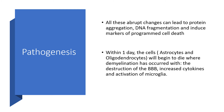Within one day, the cells — meaning the astrocytes and oligodendrocytes — will begin to die where myelination has occurred. There will be destruction of the blood-brain barrier, increased cytokines, and activation of microglia cells.